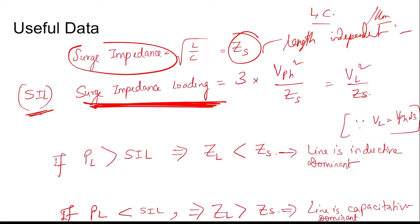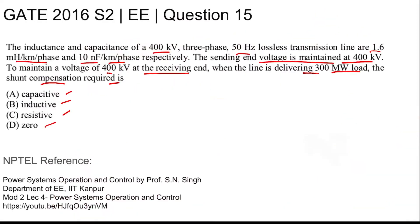If you see that the surge impedance loading (SIL) is less than the loading on the line (P load), that implies ZL is less than Zs, which implies that the line is inductive dominant. So if the surge impedance is more than the loading impedance on the line, then the line is inductive dominant. And if the loading is less, then the load impedance is more than the surge impedance, and hence the line is capacitive dominant.